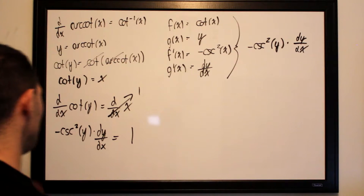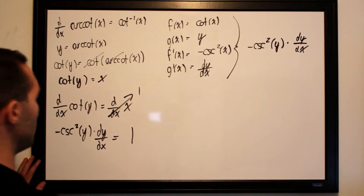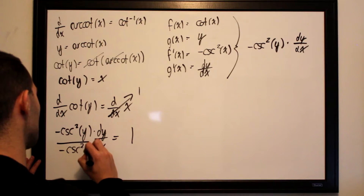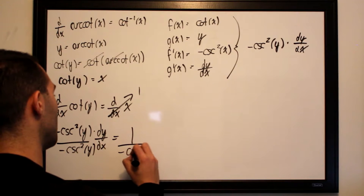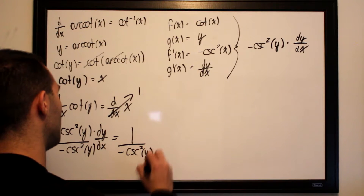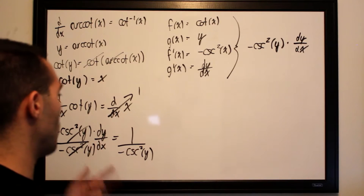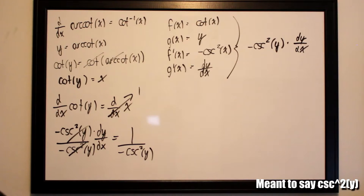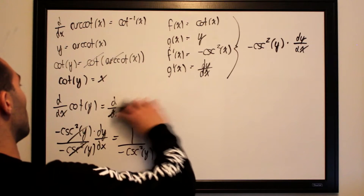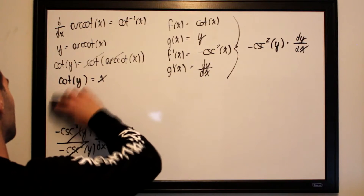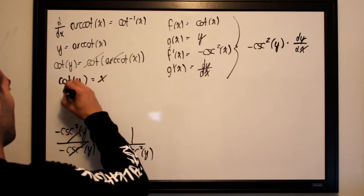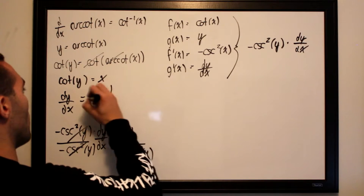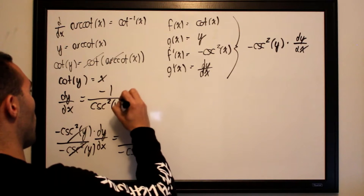Now we want to isolate dy/dx by dividing both sides by negative cosecant squared of y. That leaves dy/dx on one side and negative 1 over cosecant squared of y on the other. So dy/dx equals negative 1 over cosecant squared of y.